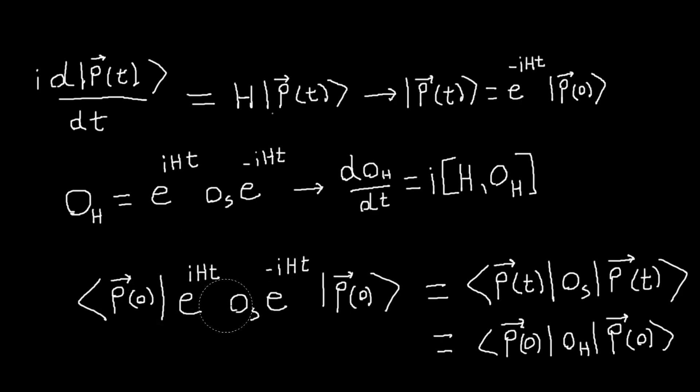So you can see here, the only difference here is either I associate these exponentials with the states in the Schrödinger picture, or I associate them with the operator in the Heisenberg picture. But either way leads to the same expressions, the same physical results.